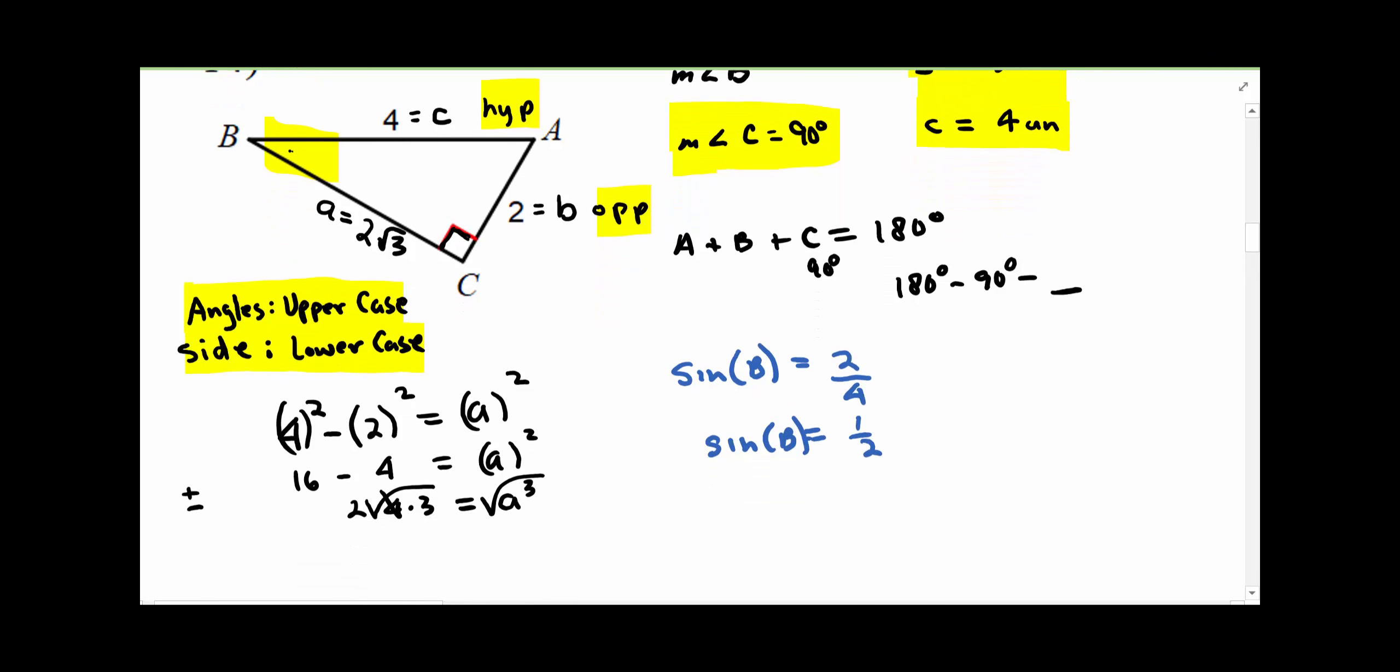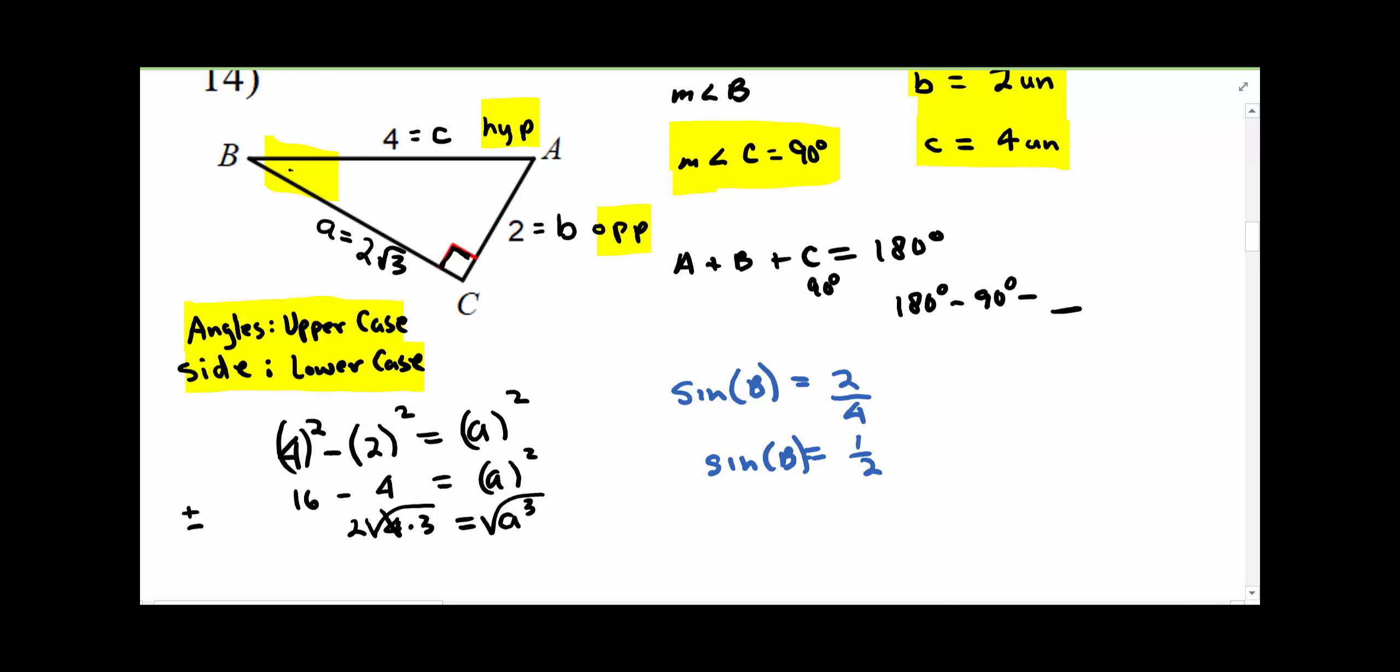And this is where you have to use that inverse sine function. So we're going to take the arc sine or the inverse sine of both sides. That cancels that. That leaves angle B.